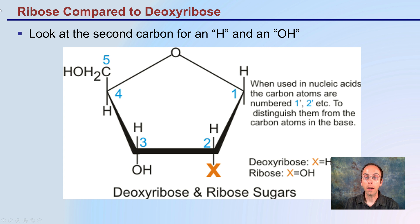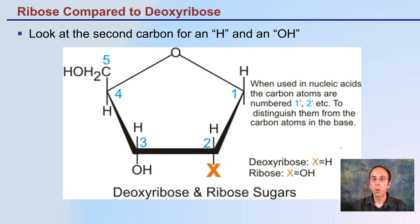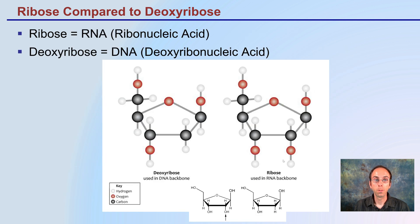Now, ribose compared to deoxyribose: look at the second carbon for H and OH. This is the area we're comparing ribose with deoxyribose. Deoxy simply means without oxygen — it has just a hydrogen, whereas ribose has an OH group. Ribose is responsible for RNA, which is ribonucleic acid; deoxyribose for DNA, deoxyribonucleic acid. So here with DNA we see that second carbon — deoxy, without oxygen. Here's ribose with oxygen; we can see that oxygen atom right here in the structure.